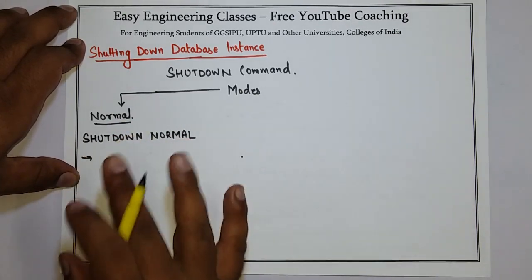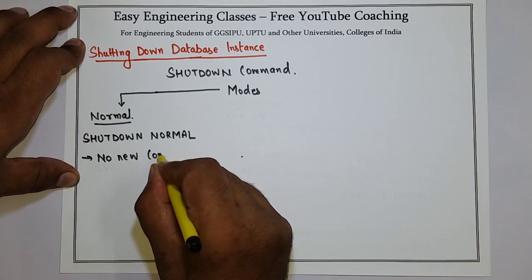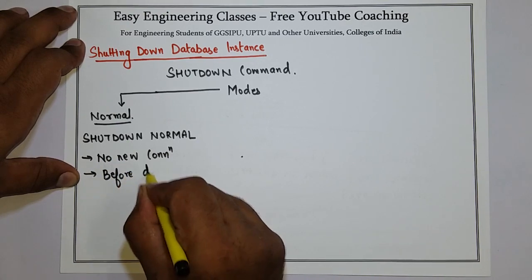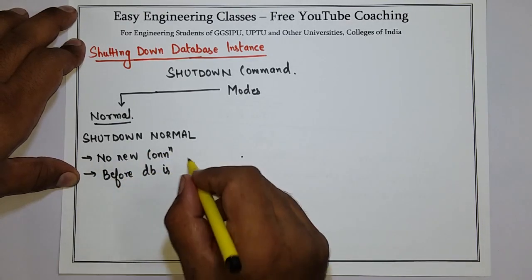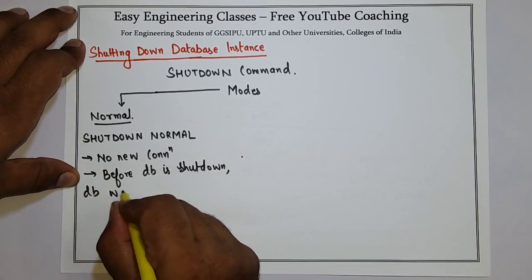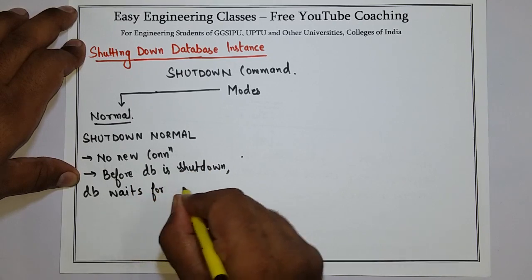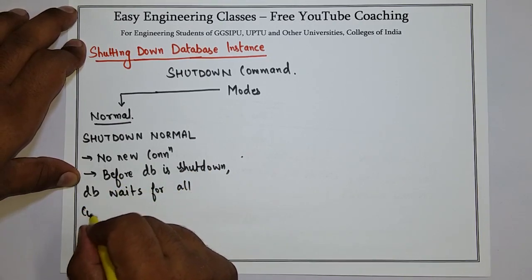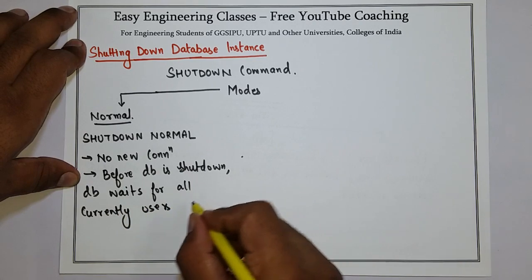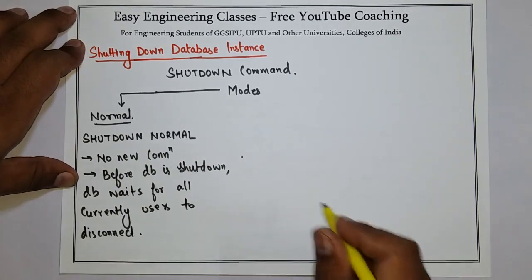Once this command is entered, there will be no new connection allowed. Before the database is shut down, the database waits for all currently connected users to disconnect. So in normal mode, the database waits for all users to disconnect.